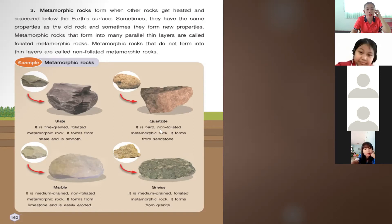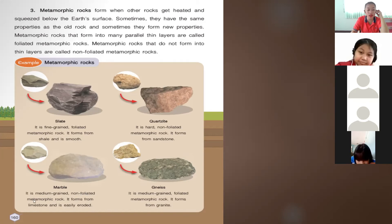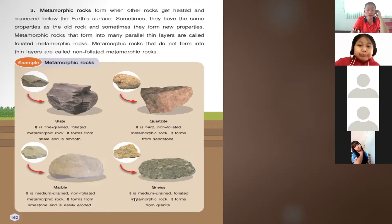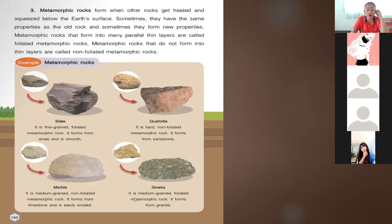Quartzite is a hard, non-foliated metamorphic rock. It forms from sandstone, which is a sedimentary rock. Marble is a medium-grained, non-foliated metamorphic rock. It forms from limestone and is easily eroded. Limestone can also be found in sedimentary rocks. Gneiss is a medium-grained, foliated metamorphic rock. It forms from granite.